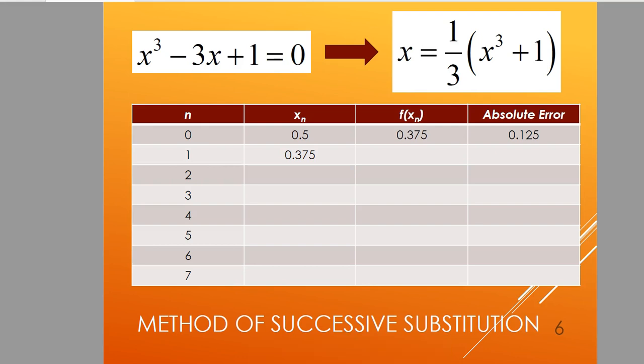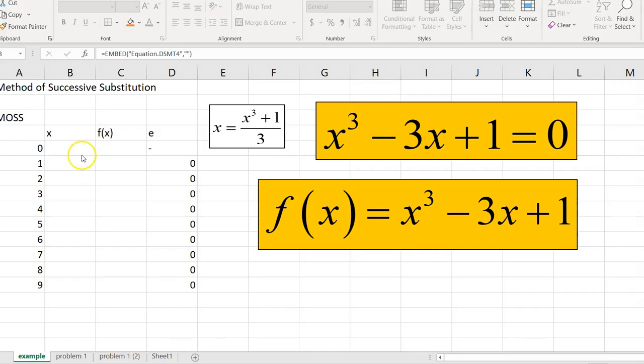In the notes, I showed you how to solve it manually. In this case, I set up a table. The table would be x_n, then the function f(x_n), and then the absolute error, basically the difference. We fill out this table. Let's use Excel.